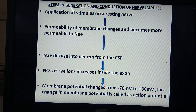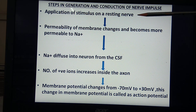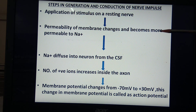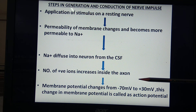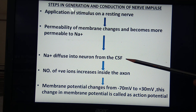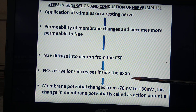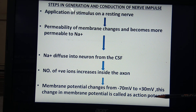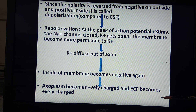The steps in generation and conduction of nerve impulse are given schematically. When a stimulus is applied to a resting nerve, the permeability of the membrane changes and becomes permeable to Na+. Na+ diffuses into the neuron from the extracellular fluid, increasing the number of positive ions inside the axon. The membrane potential changes from minus 70 to plus 30 millivolts. This change in membrane potential is called action potential. Since the polarity is reversed — negative on outside and positive inside — this is called depolarization.